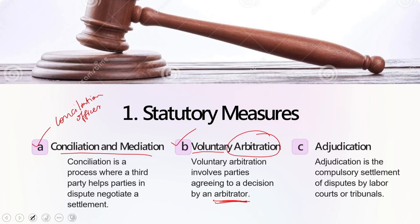Section 10A of the Industrial Disputes Act 1947 provides for the provision of voluntary arbitration, which in the real world is largely carried out by adjudication. Arbitration and adjudication have a very thin line of difference: in the former, the judge is decided by the parties involved in the dispute, whereas in adjudication the judge is appointed by the state — making adjudication more authoritative. When looking into voluntary arbitration specifically, there are different cases, especially the case of Ahmedabad textile mills, which we look into in the coming slides.